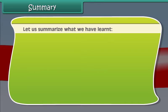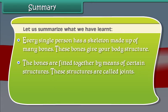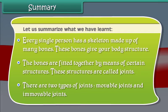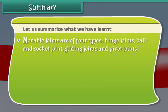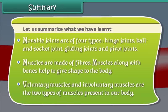Let us summarize what we have learned. Every single person has a skeleton made up of many bones. These bones give our body structure. The bones are fitted together by means of certain structures called joints. There are two types of joints: moveable and immovable joints. Moveable joints are of four types: hinge joints, ball and socket joints, gliding joints, and pivot joints. Muscles are made of fibers. Muscles along with bones help to give shape to the body. Voluntary muscles and involuntary muscles are the two types of muscles present in our body.